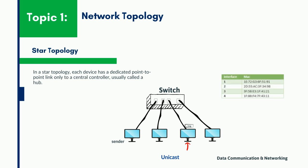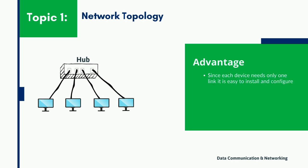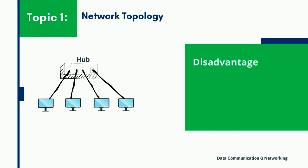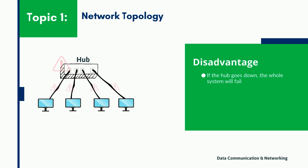This unicasting is only possible because the switches learn the MAC addresses of the devices connected to them. Star topology is quite advantageous as it requires very less cabling, and each device needs only one link and one input-output port to connect to other devices. Also, if one link fails, only that one link is affected. However, since all the devices are connected to the central controlling device such as a hub, if the hub fails the whole system will go down. Also, the number of devices in the network is limited to the number of input-output ports in the hub.